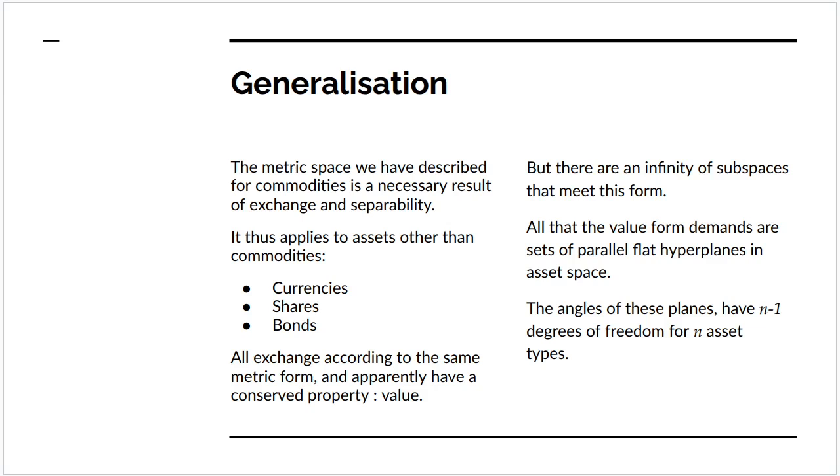Now, given this appearance, the problem is that there's an infinity of subspaces which meet this form. All that the value form says is that you've got to have parallel flat hyperplanes in asset space. But the angles that these planes have, the angles of these planes, have n-1 degrees of freedom for n asset classes.